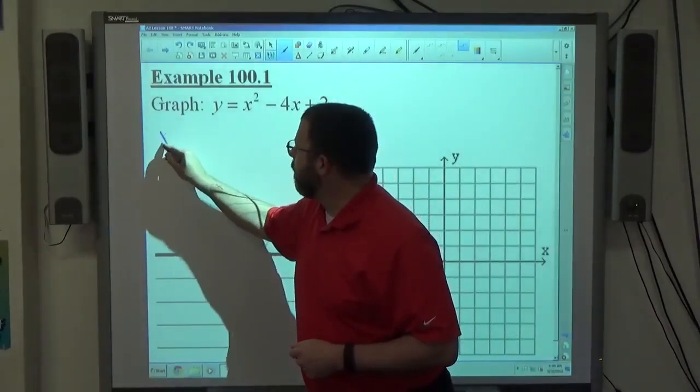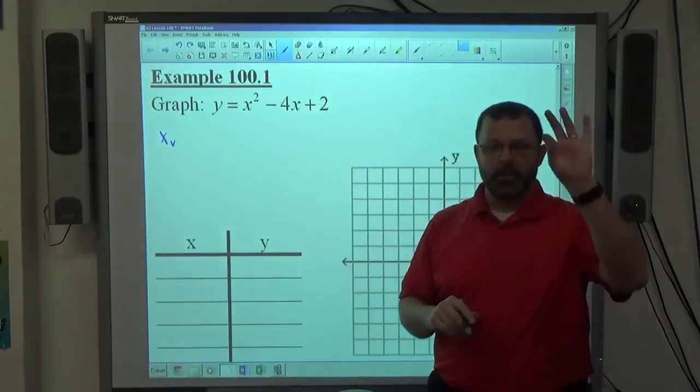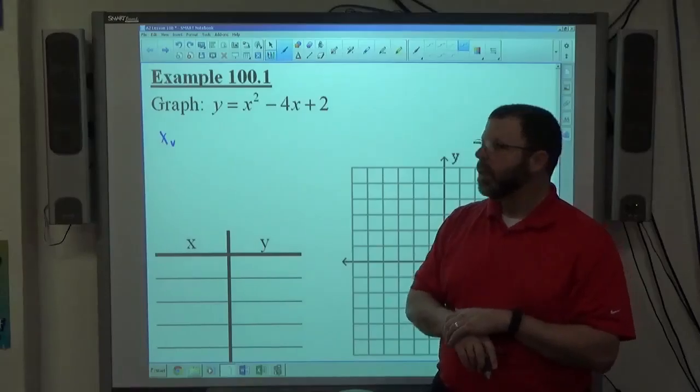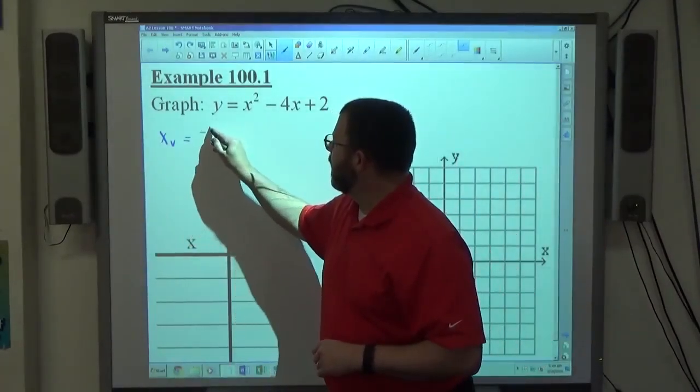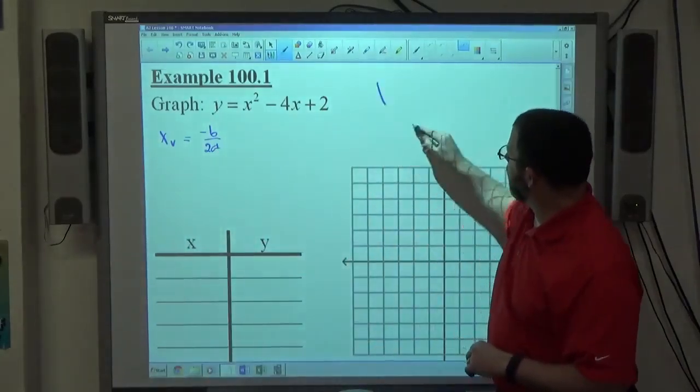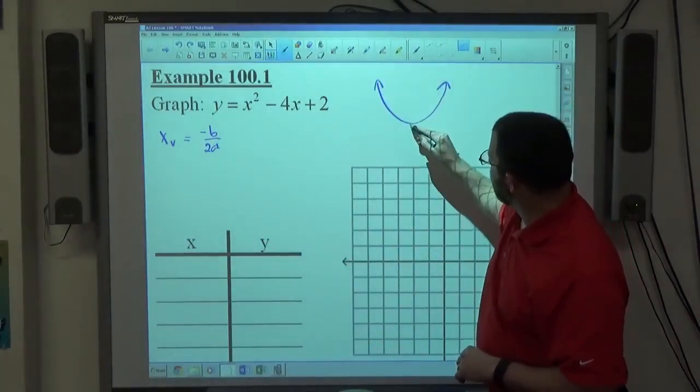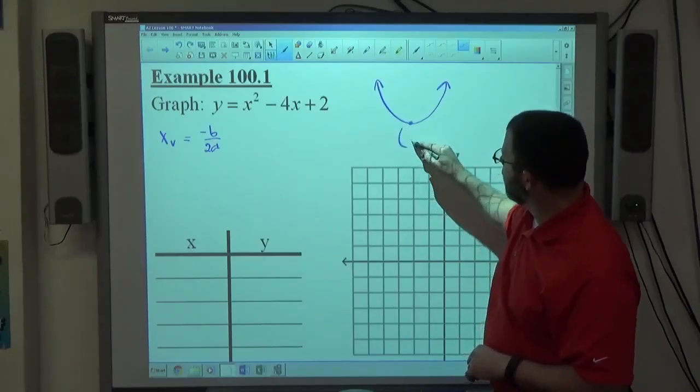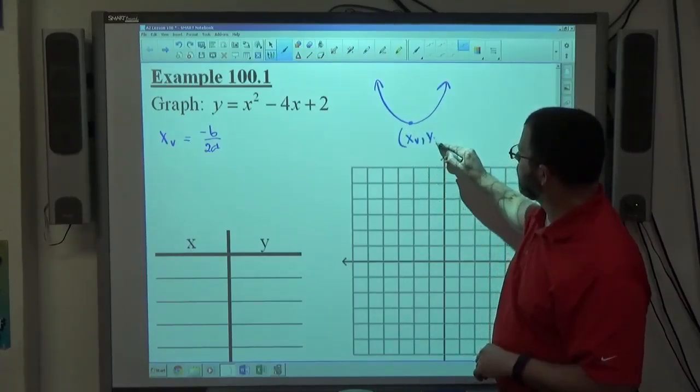The x-coordinate of the vertex, the point that's either the highest or the lowest point of the parabola, is negative b over 2a. So if I'm graphing a parabola again, it looks like this, and this point here called the vertex is x sub v comma y sub v.